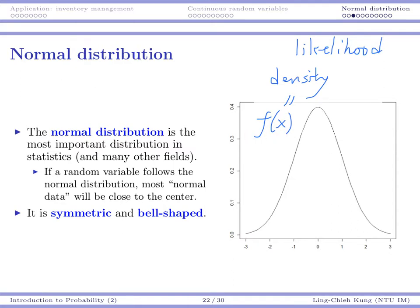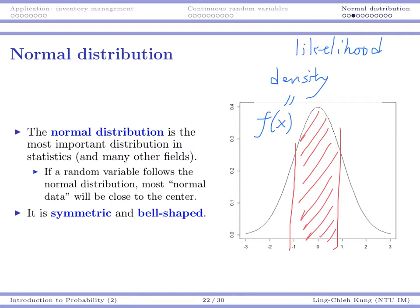Even though the PDF does not directly express probability, it tells you that if the curve is higher, the likelihood for a value to occur around that region is higher. If I cut a region, the area under the curve is the probability for the value to occur within that interval. For a region far from the center, the probability decreases a lot. That's what normal distribution wants to describe — data with a strong central tendency.